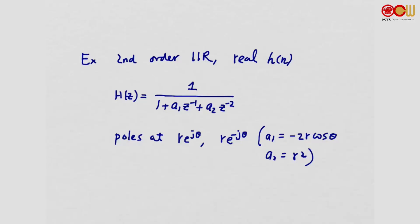Let's look at one example to see the effect of coefficient quantization. We have a second-order IIR with real coefficients. We focus on the poles and ignore the zeros for the moment. The poles are at r·e^(jθ) and r·e^(-jθ), a complex conjugate pair. In particular, the coefficient a1 equals -2r·cos(θ) and a2 equals r². If we implement using direct form and quantize with 3 bits, the quantized coefficients are a1 and a2.